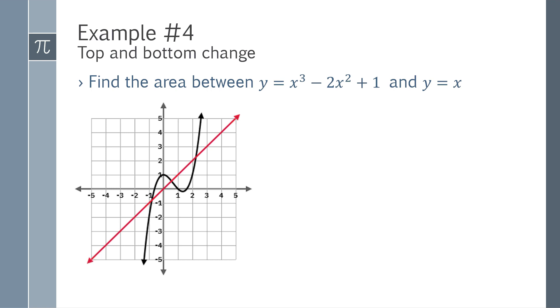We're asked to find the area between y equals x cubed minus 2x squared plus 1 and y equals x. Looking at this function, I actually have two different parts to this. What makes this different is what's top and what's bottom changes depending on which piece I look at. They don't tell me which piece they are intending, so I have to assume they mean they want both pieces.